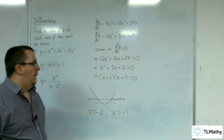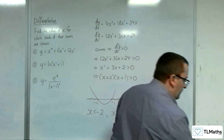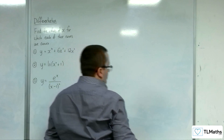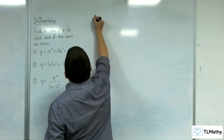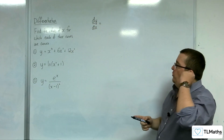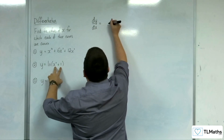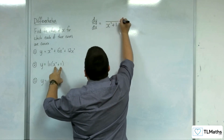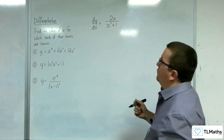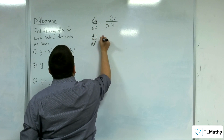Those are the values of x for which the curve is convex. For number 2, when you differentiate the natural logarithm of some function, the trick is that the interior function goes into the denominator and the derivative of the interior function goes into the numerator. So we have 2x over x² + 1. In order to differentiate that, I would have to use the quotient rule.